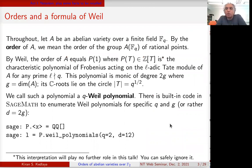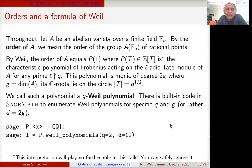Act one is where we meet the characters. The characters in this drama are abelian varieties and their associated Weil polynomials. A is always going to be an abelian variety over a finite field F_q. I'll frequently refer to the order of an abelian variety — a slightly nonstandard terminology — meaning the order of the group of rational points of A. We're not using the group structure very much; we're mostly using Weil's interpretation of this order as the value of a polynomial.